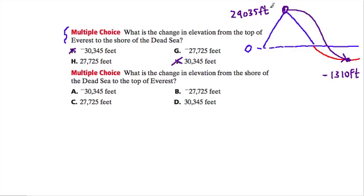Don't be overwhelmed by the exact calculation. Just notice that this distance has to be greater than 29,000, because we're going 29,000 feet at least to go from the top of the mountain to sea level, and then another 1,310.